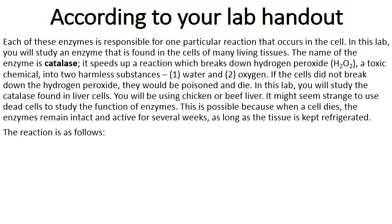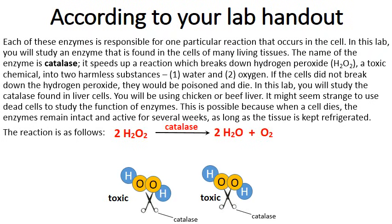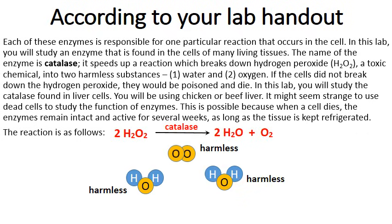The chemical reaction we're going to follow looks like this: two molecules of H2O2, hydrogen peroxide — a toxic molecule — will yield, in the presence of catalase, two molecules of water and oxygen. Hydrogen peroxide can build up in our cells and poison them if we don't have a way of getting rid of it. Catalase takes poisonous hydrogen peroxide and breaks it down into harmless molecules of water and oxygen.